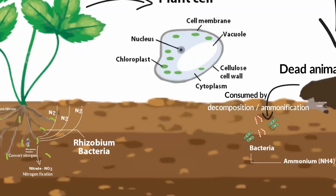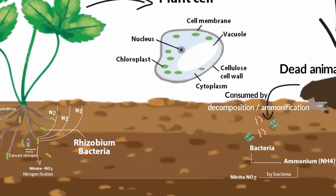It is difficult for plants to use ammonium, so this waste ammonium is again broken down by bacteria through a process called nitrification. Basically, ammonia is first converted into nitrite and then to nitrate, and now the plants can absorb nitrate.